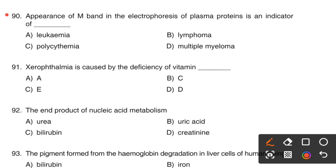Next question. The appearance of M band in the electrophoresis of plasma proteins is an indicator of dash. Option A, Leukemia. Option B, Lymphoma. Option C, Polycythemia. Option D, Multiple myeloma. The right answer is Option D, Multiple myeloma.